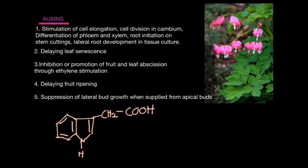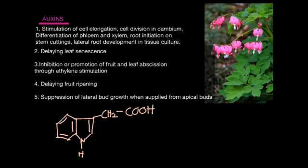The first function is the stimulation of cell elongation and cell division in cambium, as well as limb differentiation, root initiation in stem cuttings, and more. Auxins also help in delaying leaf senescence — senescence refers to aging or showing signs of old age — keeping plants looking fresh. There is also the inhibition of leaf and fruit abscission, meaning auxins help prevent leaves and sometimes fruits from falling off.